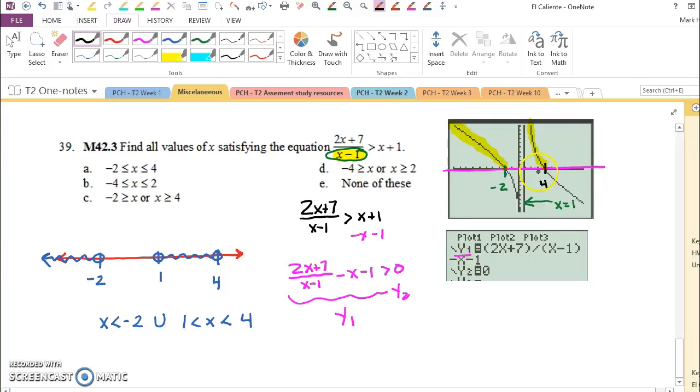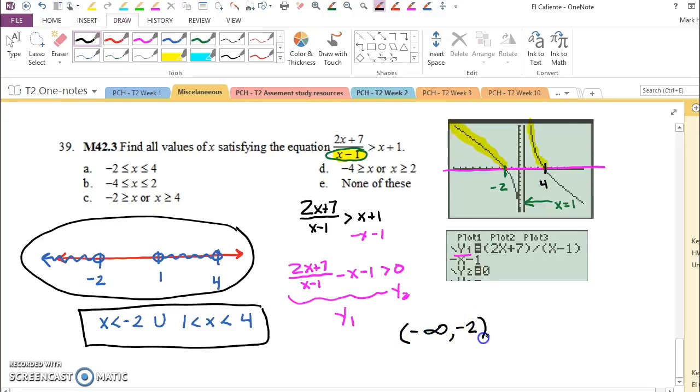And so then the solution set is graphed over here. And it's shown in inequality notation here. You could have also written it as negative infinity to negative 2, not including negative 2 because we have greater than, not greater than or equal to, union from 1 to 4.